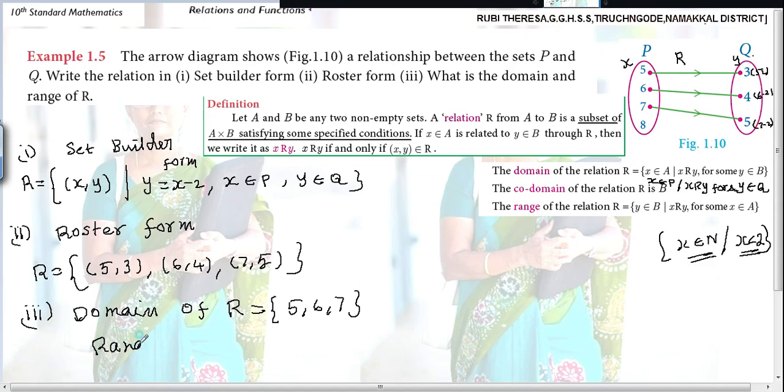Next, range. Range of R equals the second element of the ordered pair, the images that are formed. The range of the relation is Y is an element of Q. X is related to Y for some X is an element of P. Those who are brilliant children should know all these type of details. Then only when you go to higher classes you will be able to answer objective type questions. Without knowing the concept, please don't try to answer this type of questions.